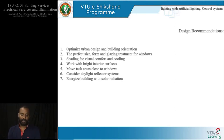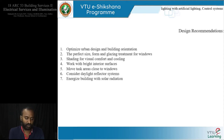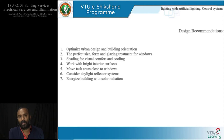The design recommendations to sum up what we have discussed: optimize urban design and building orientation; the perfect size, form, and glazing treatment for windows; shading for visual comfort and cooling; work with bright interior surfaces; move task areas close to windows; consider daylight reflecting systems; and energize the building with solar radiation. These are the basic passive design recommendations we can make apart from our lighting control strategies.